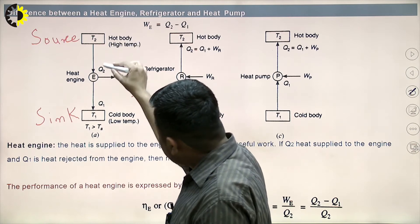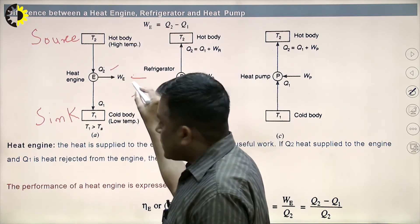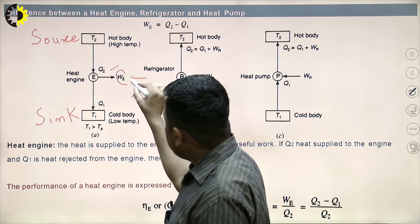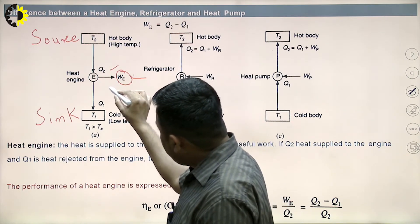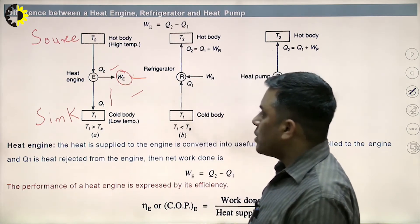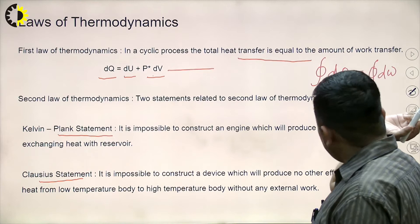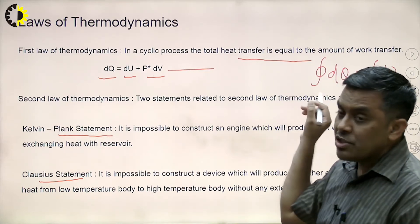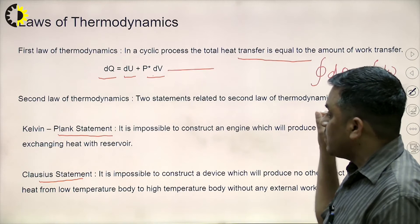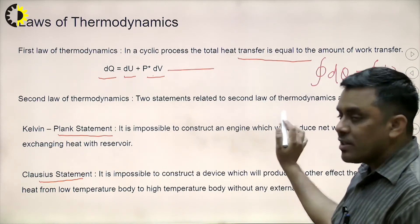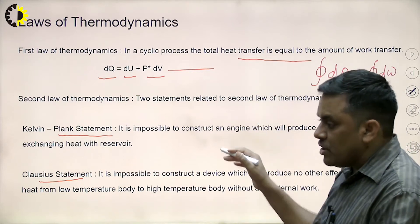Q2 amount of heat is extracted from the high temperature source; some part is converted into useful work W_e, and the remaining part that cannot be converted into work is rejected to the low temperature body. This is the Kelvin-Planck statement. As per the first law, net heat transfer must equal net work transfer — the word 'net' is important. It is impossible to construct an engine that produces net work done while exchanging heat from a single reservoir.